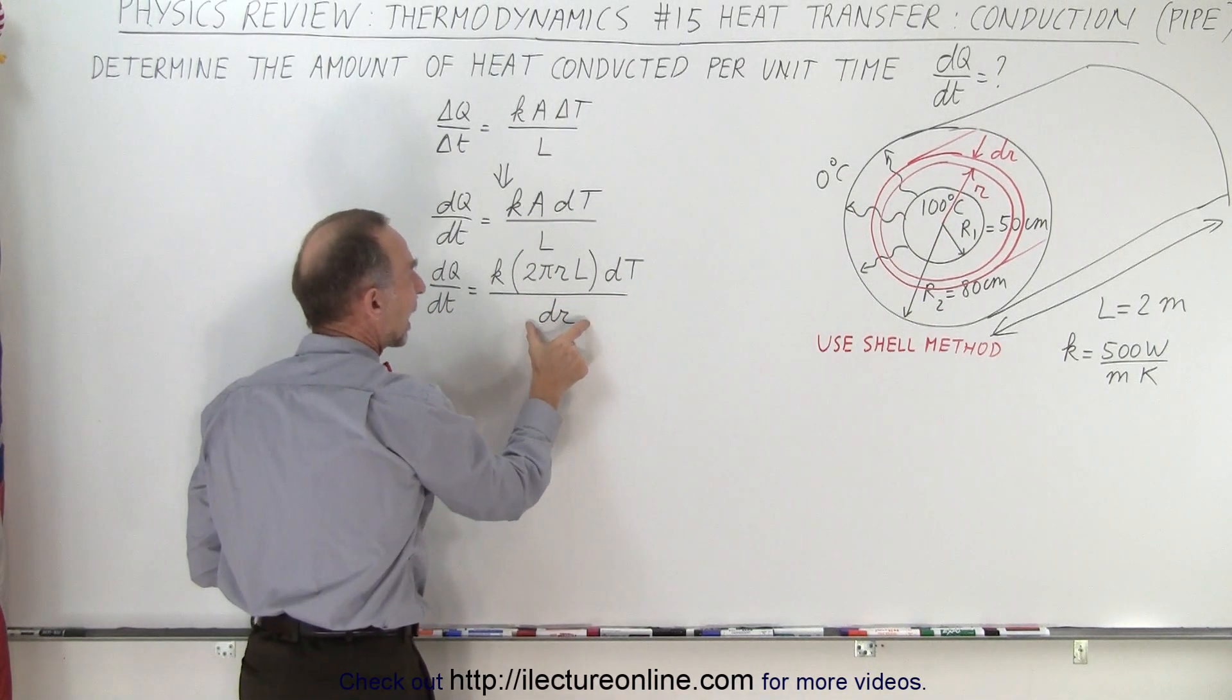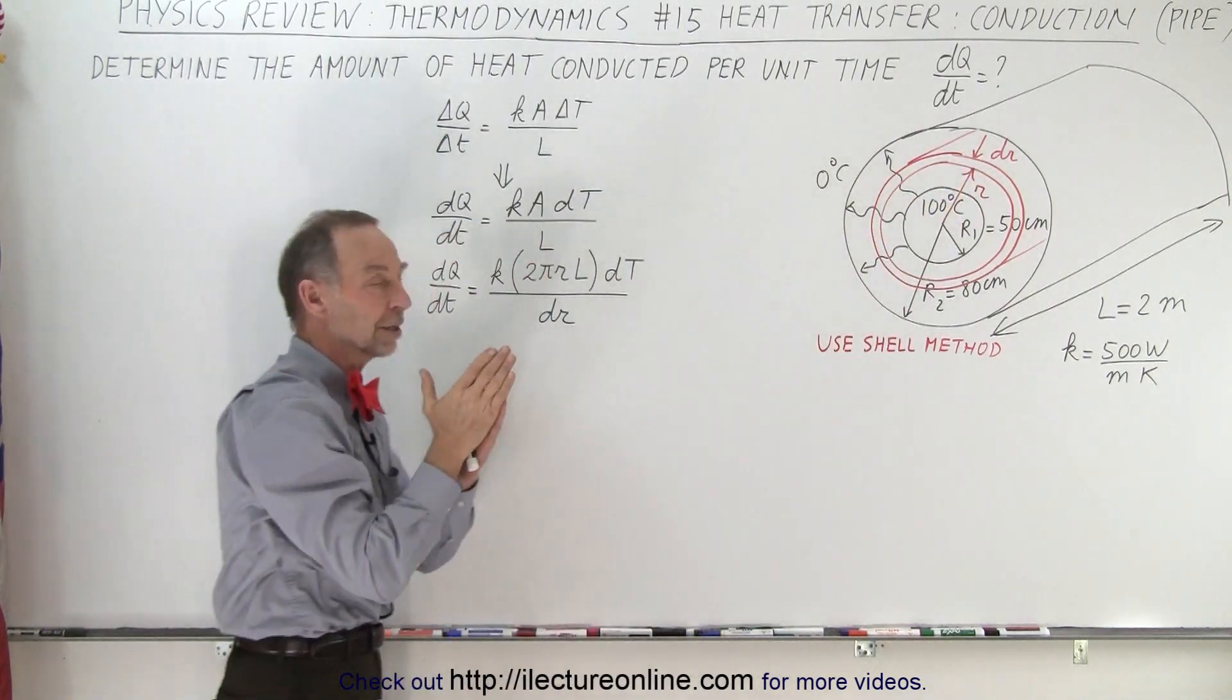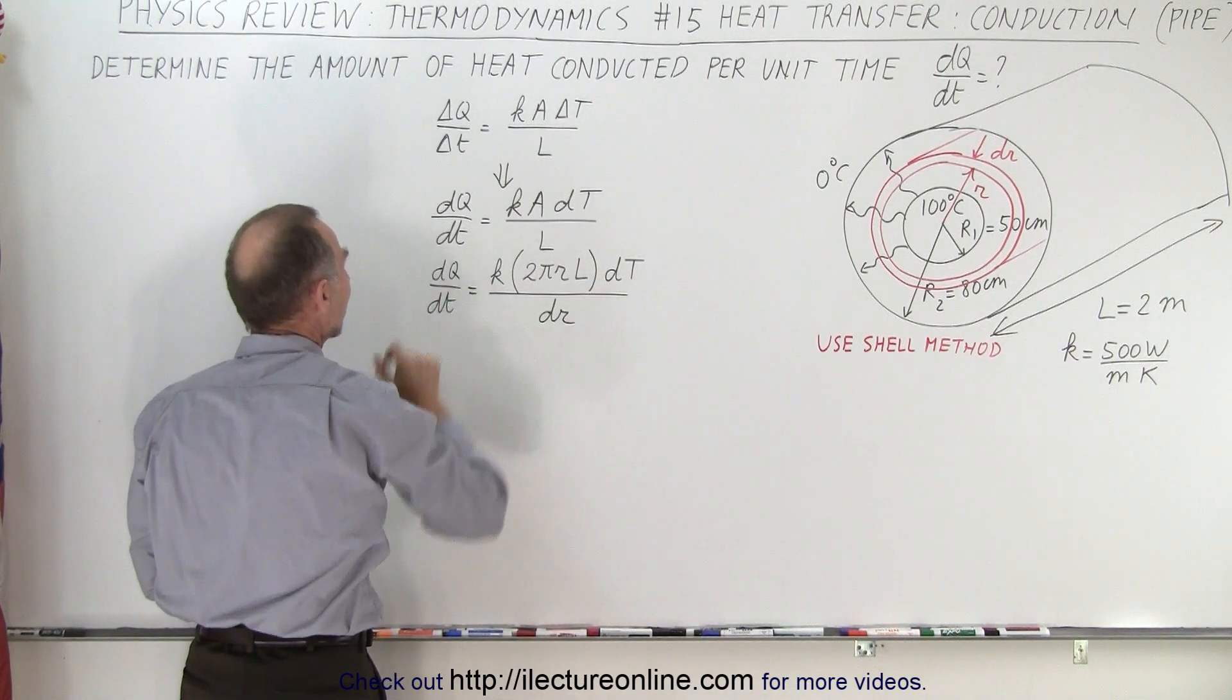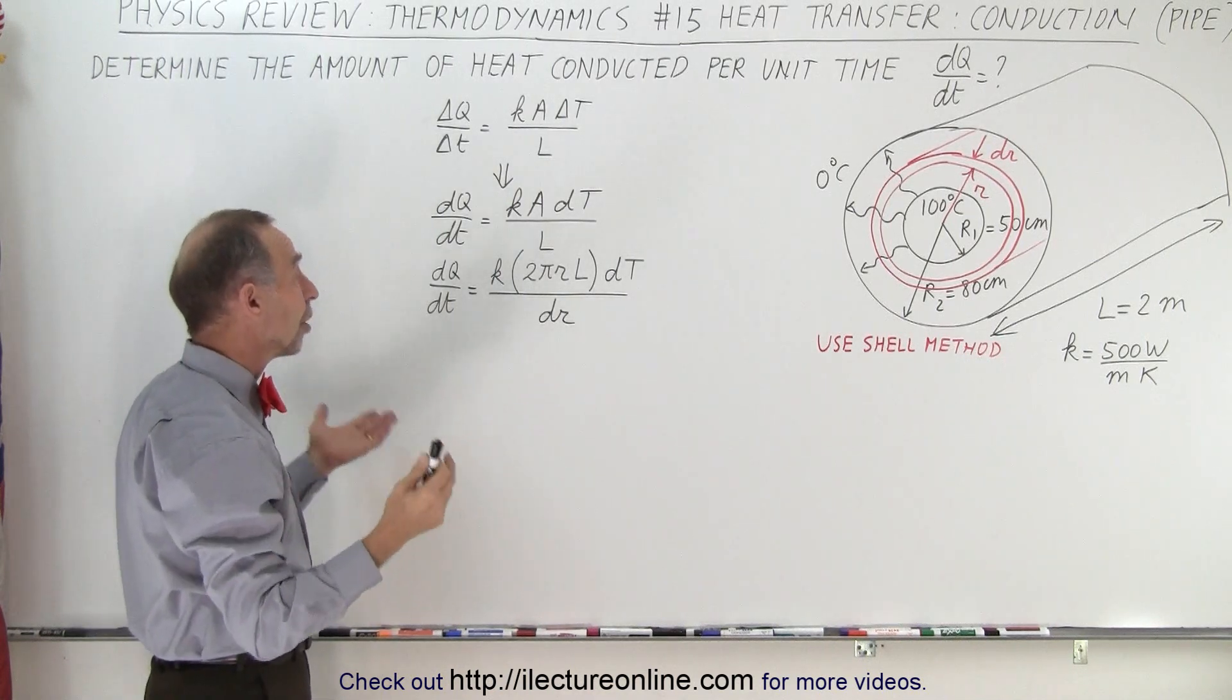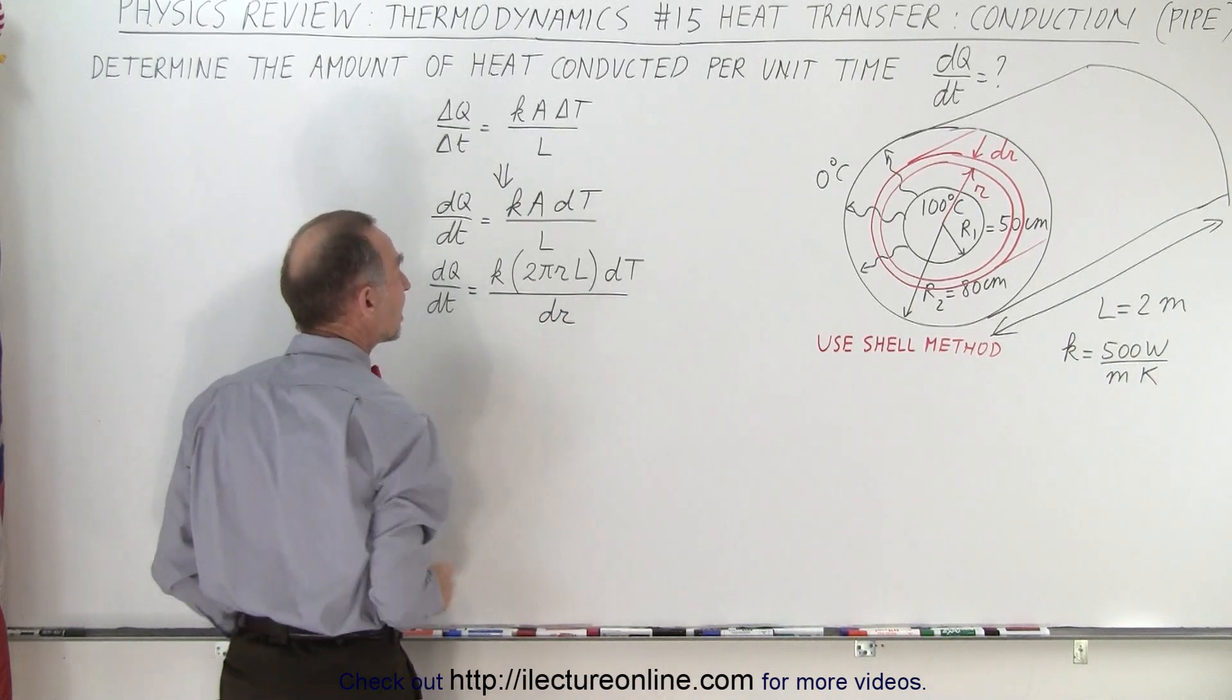The length of the path is the small dr, and we still have the k. Now we have the dT here and we have dQ/dt here. At this point, what we have to do is integrate over the two differentials, the dr and the dT.